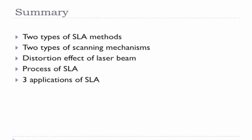Let's move on to the summary. I hope you know now that there are two main types of SLA methods, two types of scanning mechanisms for laser beam type of 3D printers, the distortion effect phenomena of laser beam when you use the scanning mirror, the process of the SLA, and lastly three applications of SLA. I hope you know more about the SLA methods and once again I hope after you watch this episode, you look down to the description below to watch the links I'll be posting of videos that people have done for the SLA method so that you have a better understanding.